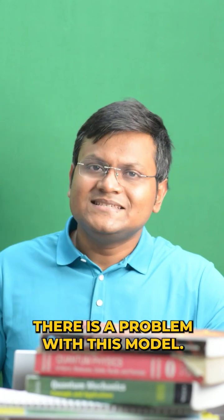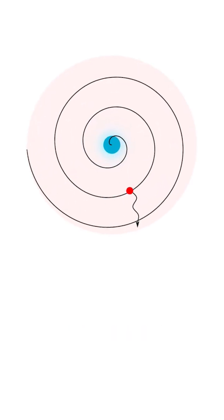However, there is a problem with this model. Since the electron is a charged particle, a charged particle going around a nucleus should lose energy in the form of radiation and slowly spiral inwards and collapse into the atom.